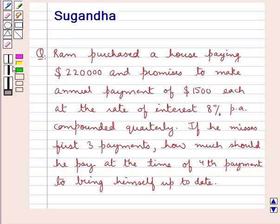Hello and welcome to the session. In this session we discuss the following question: Ram purchased a house paying $220,000 and promises to make annual payment of $1,500 each at the rate of interest 8% per annum compounded quarterly. If he misses first three payments, how much should he pay at the time of fourth payment to bring himself up to date?